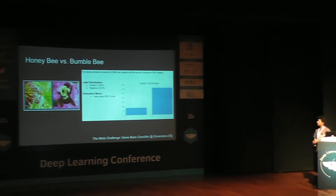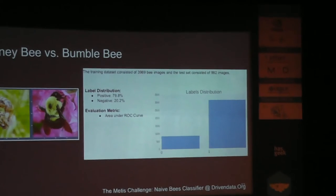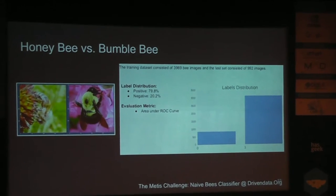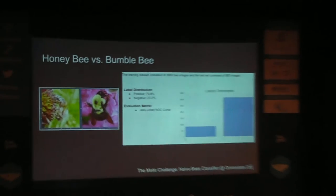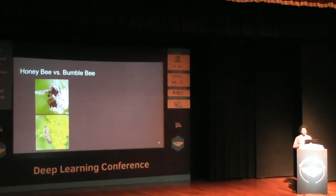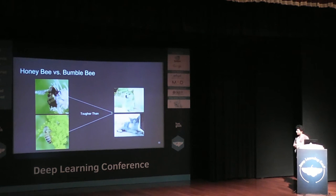One use case was a challenge: distinguishing between a honeybee and a bumblebee. The training dataset had around 4,000 images and 1,000 images for the test set — a very small dataset. It was 79% positive and 21% negative samples, and the evaluation metric was area under the ROC curve. It's tougher than distinguishing between a dog and a cat.